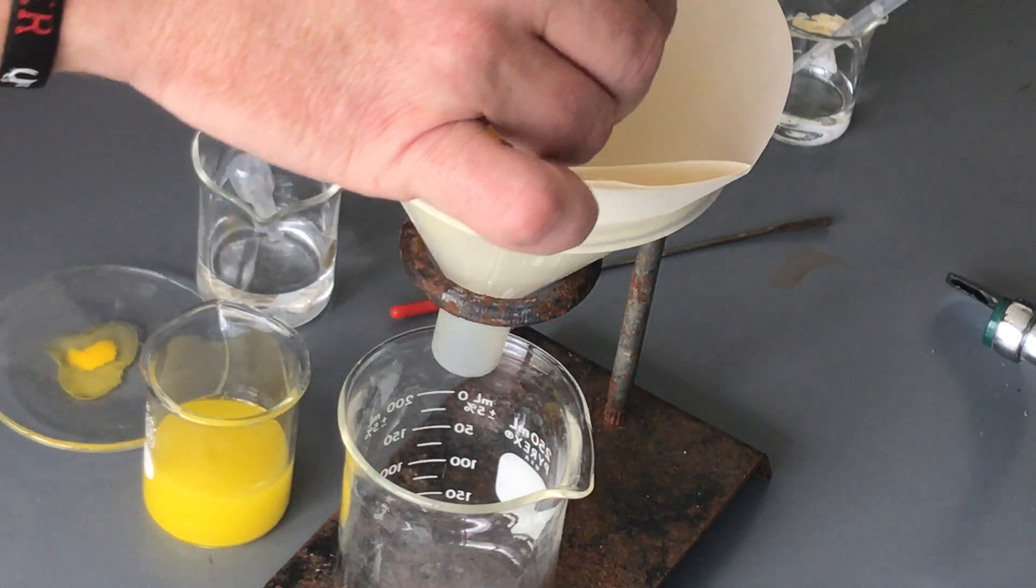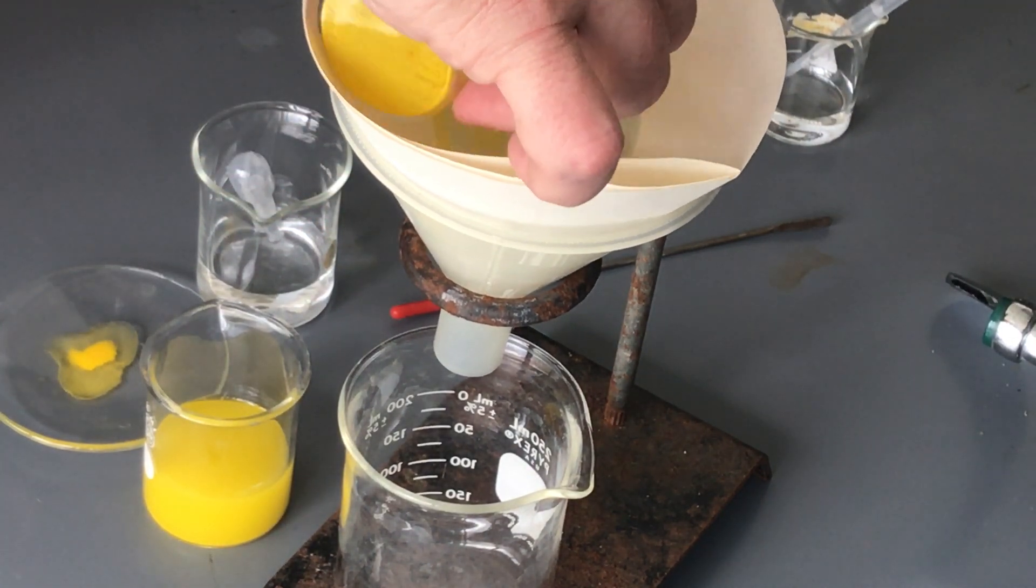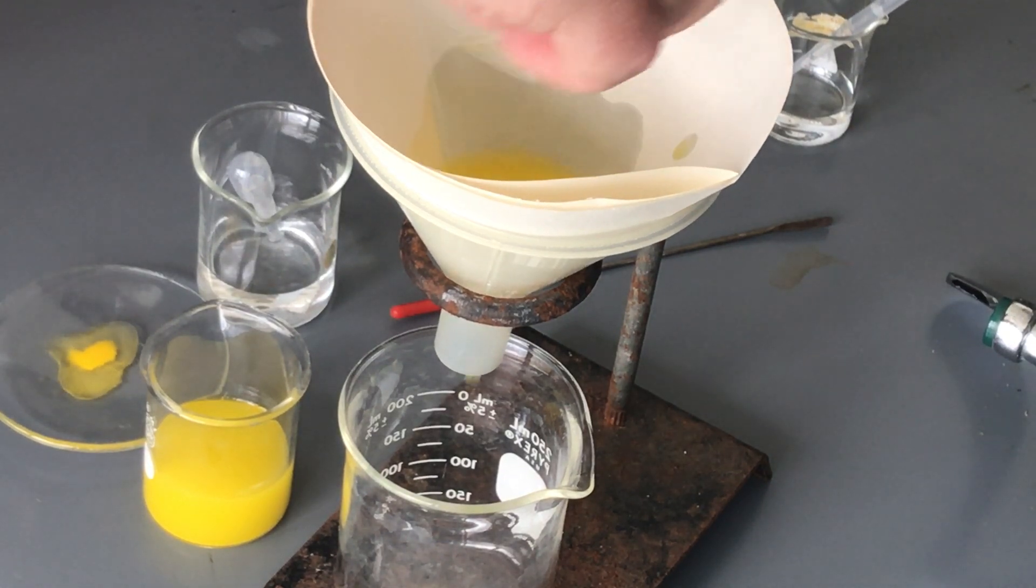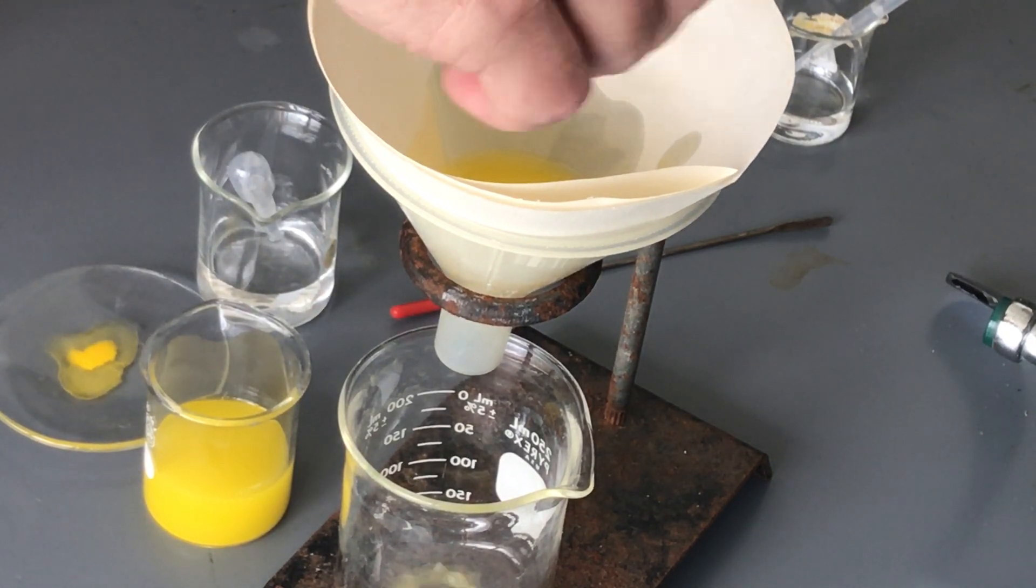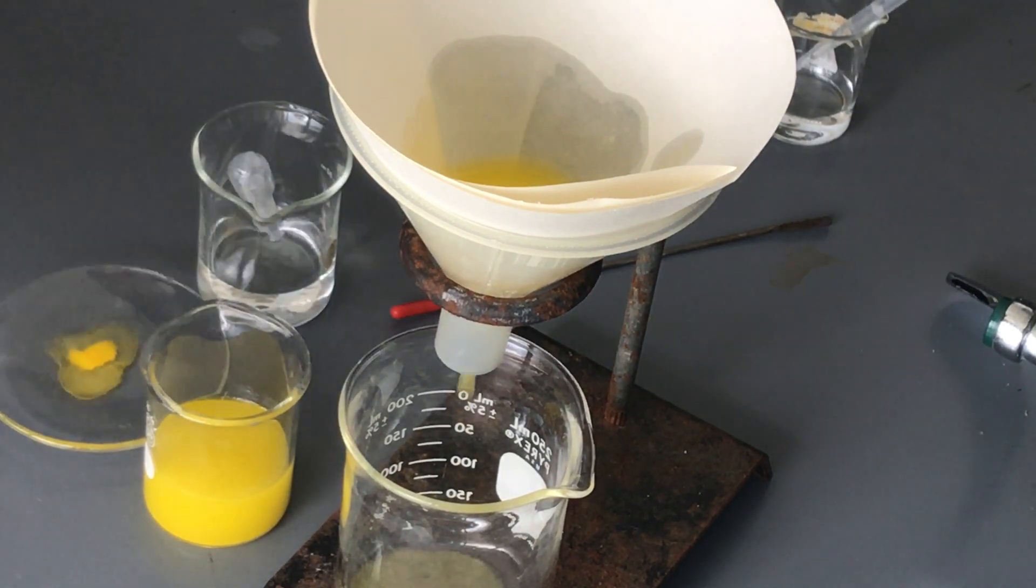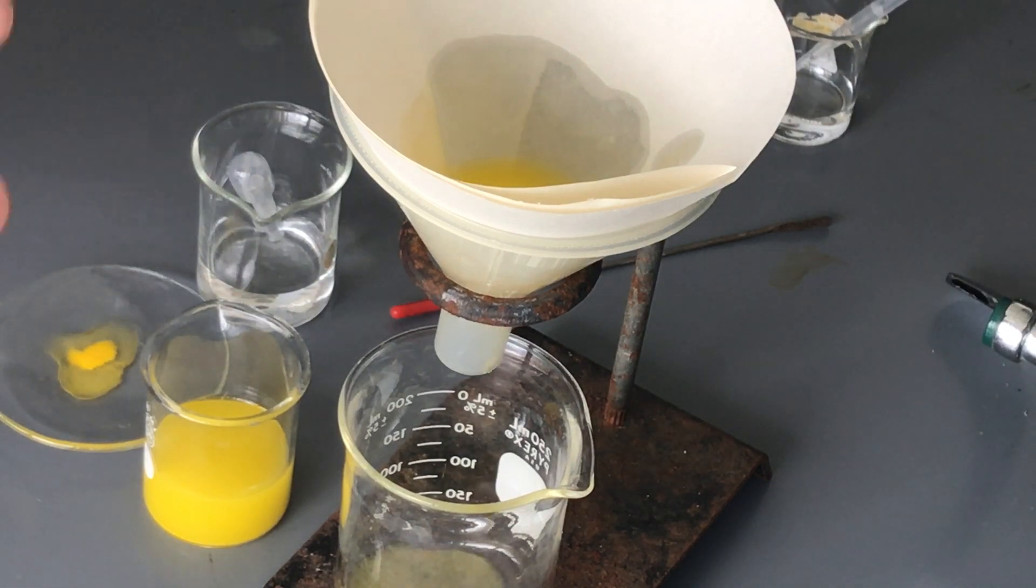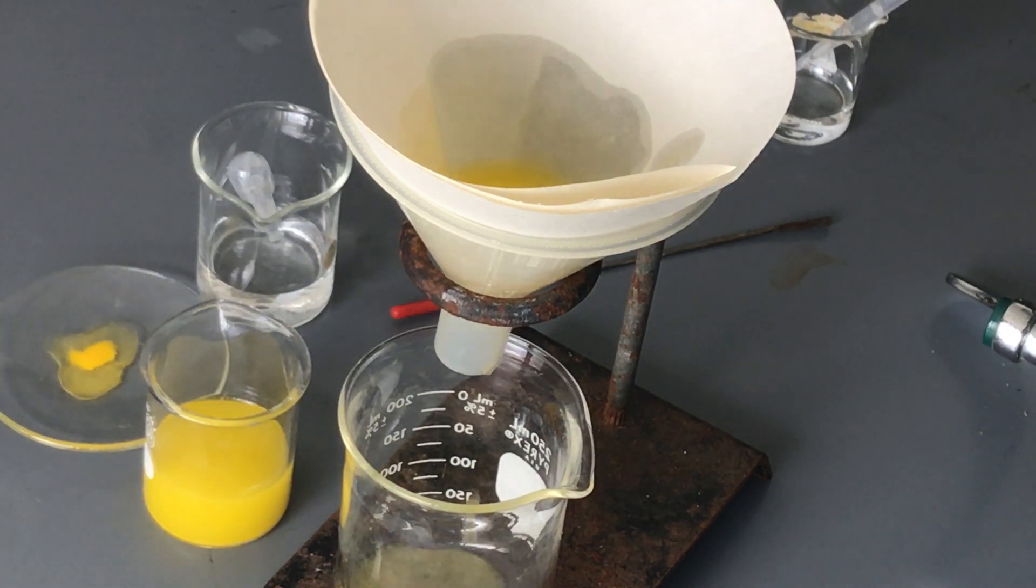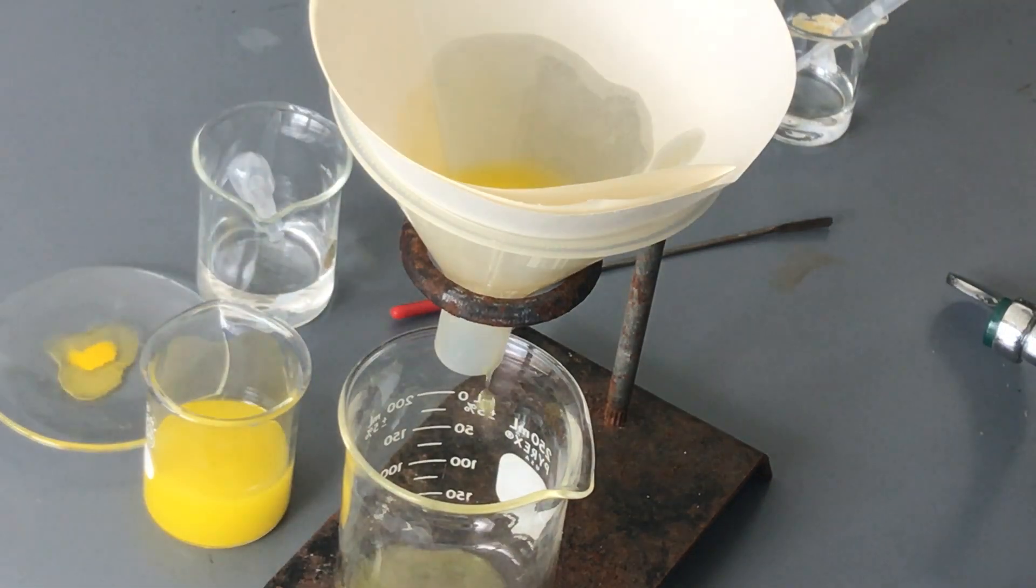We can just basically start to pour it into our filter paper and our filter paper should be able to take most of it out. Now depending on the severity and how well the filter paper is made there may be some holes. So I'm already looking and seeing that I'm getting a lot of yellow at the bottom and so this might not be the best filter paper to use. So I might have to do a double run or use a thicker material.